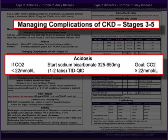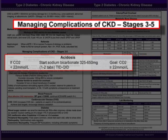Treat acidosis using sodium bicarbonate when the CO2 or bicarb level is less than 22 millimoles per liter. The usual dosage range for sodium bicarb is 325 to 650 milligrams two to four times a day. The goal is a bicarb level of at least 22.